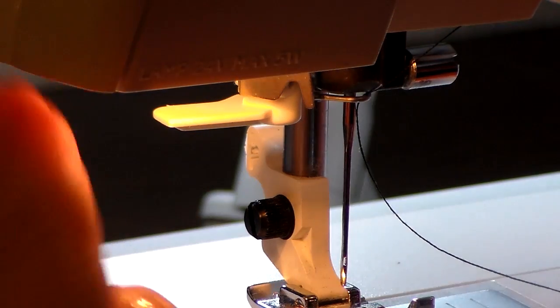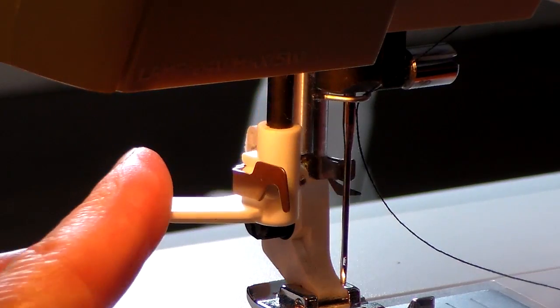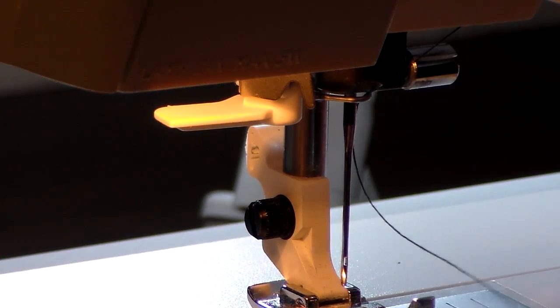You'll know that you have one because you'll have a little lever. It looks something like this on the side of your machine near the needle.